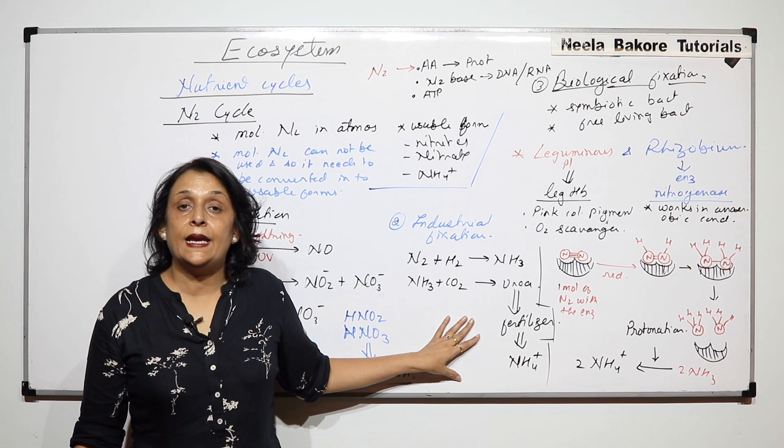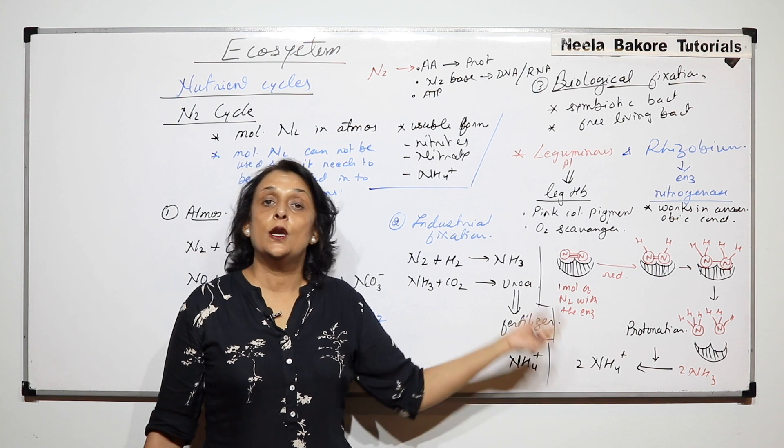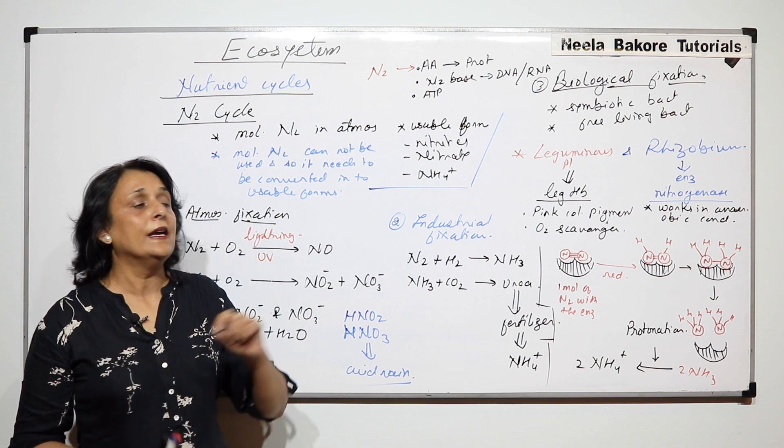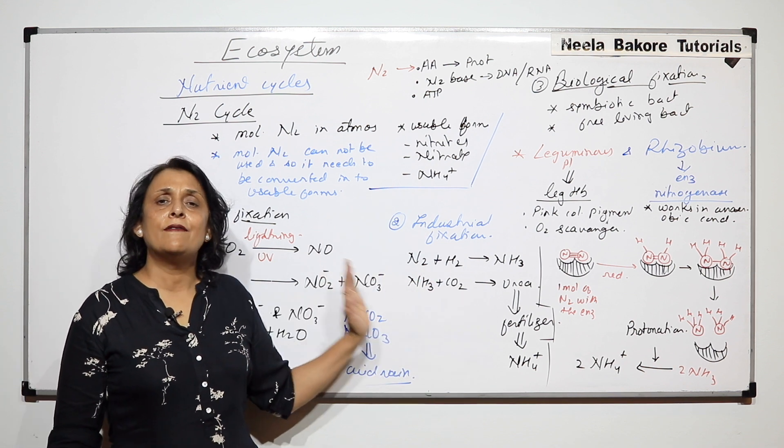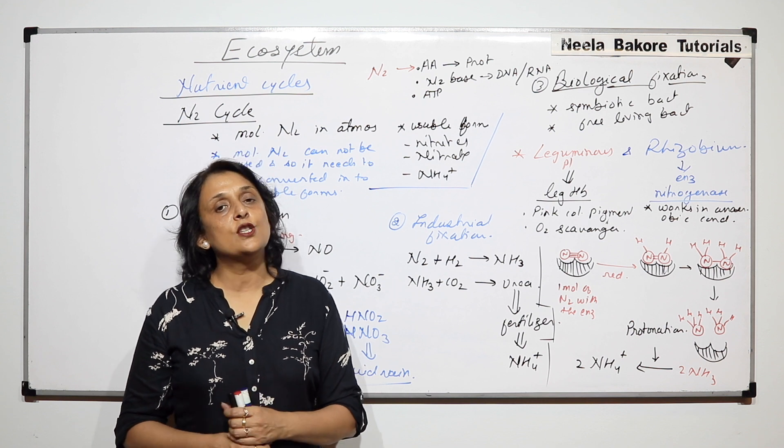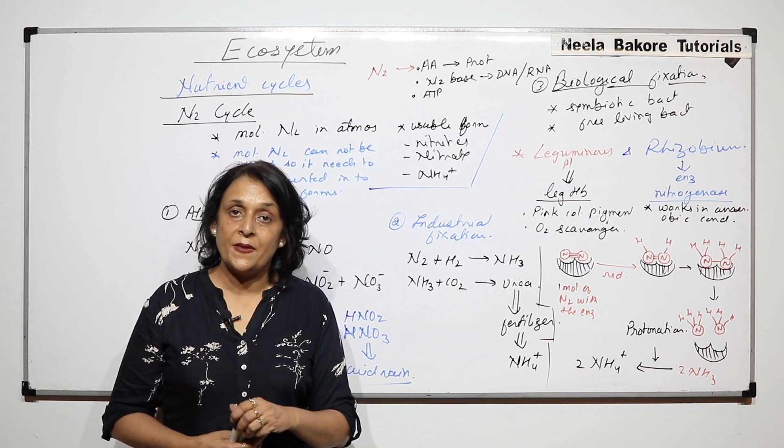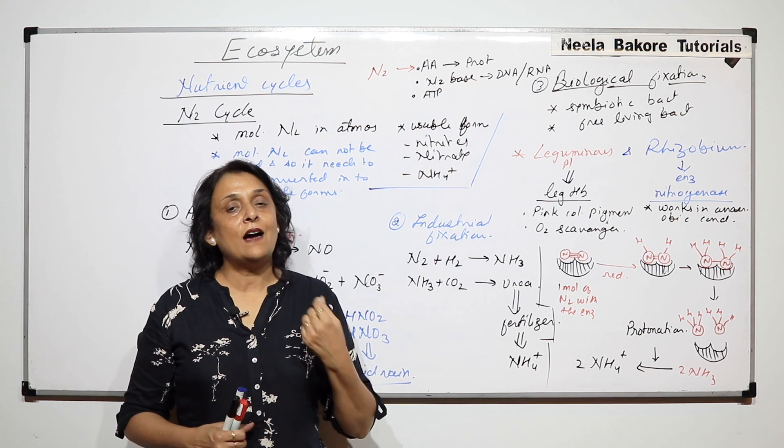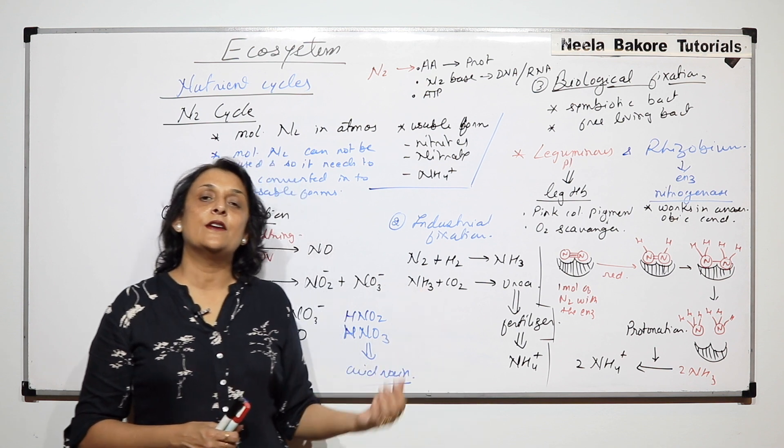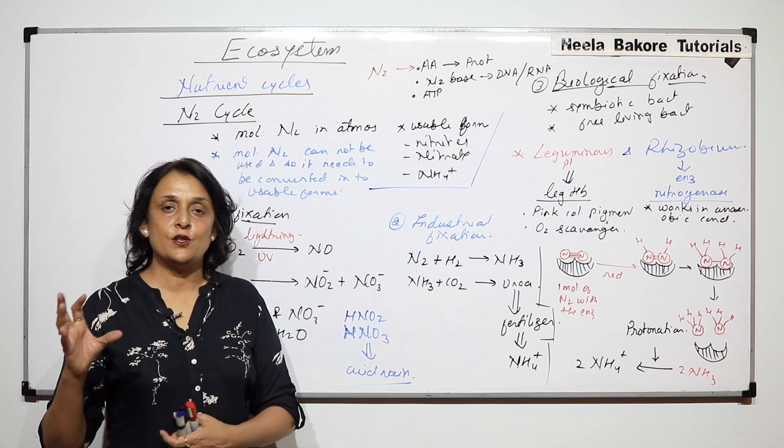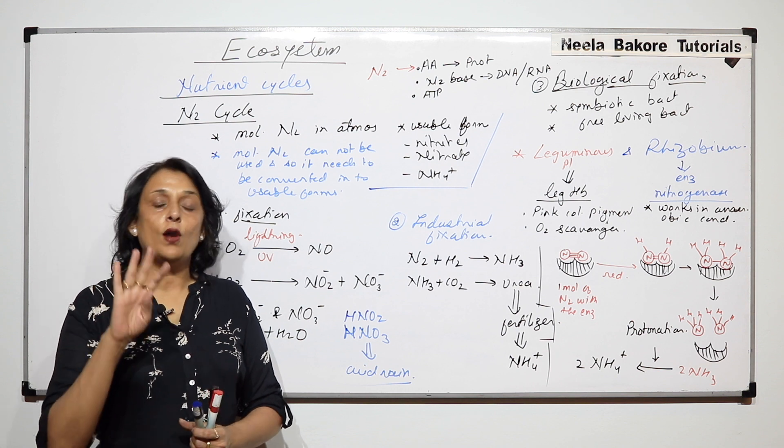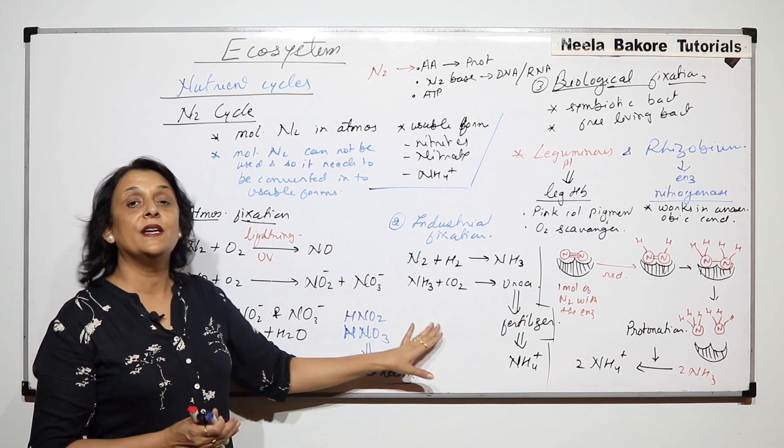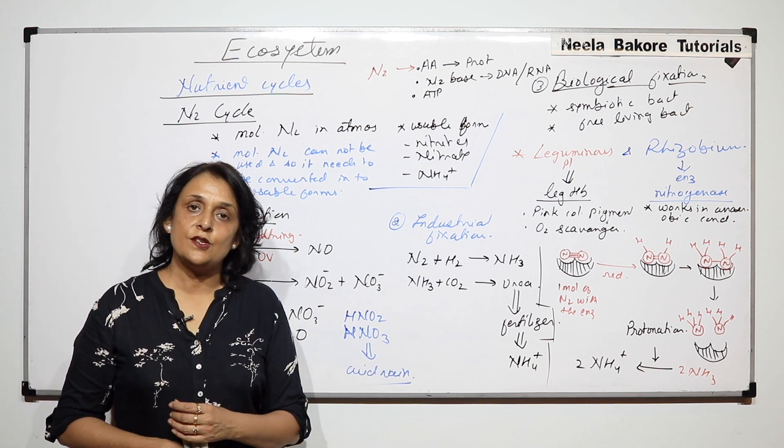And more detail of this like biological fixation in more detail we have discussed in the chapter of mineral nutrition. So if you need that you can watch that video. But this is just to have an idea that how this nitrogen is moving in the living system. Plants convert that nitrogen into protein. We take it in the form of food. After death and decomposition this nitrogen will be again released back into the atmosphere. So the mineral cycles all four carbon, phosphorus, sulfur and nitrogen cycles. So we have completed all these mineral cycles which are in this chapter.